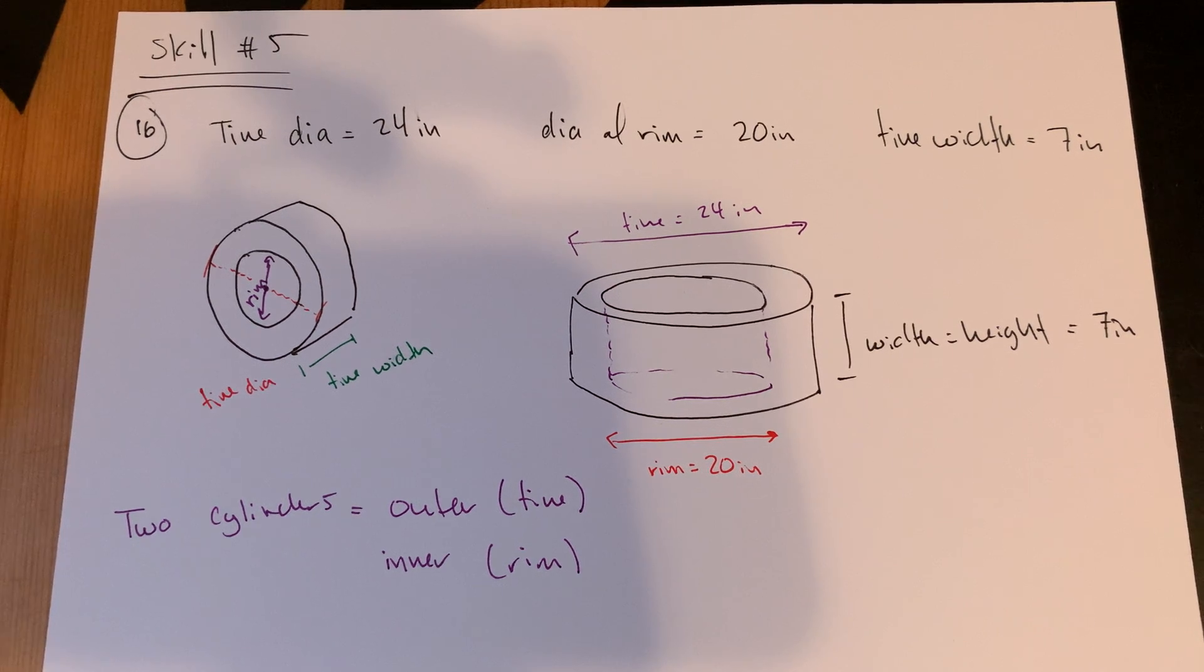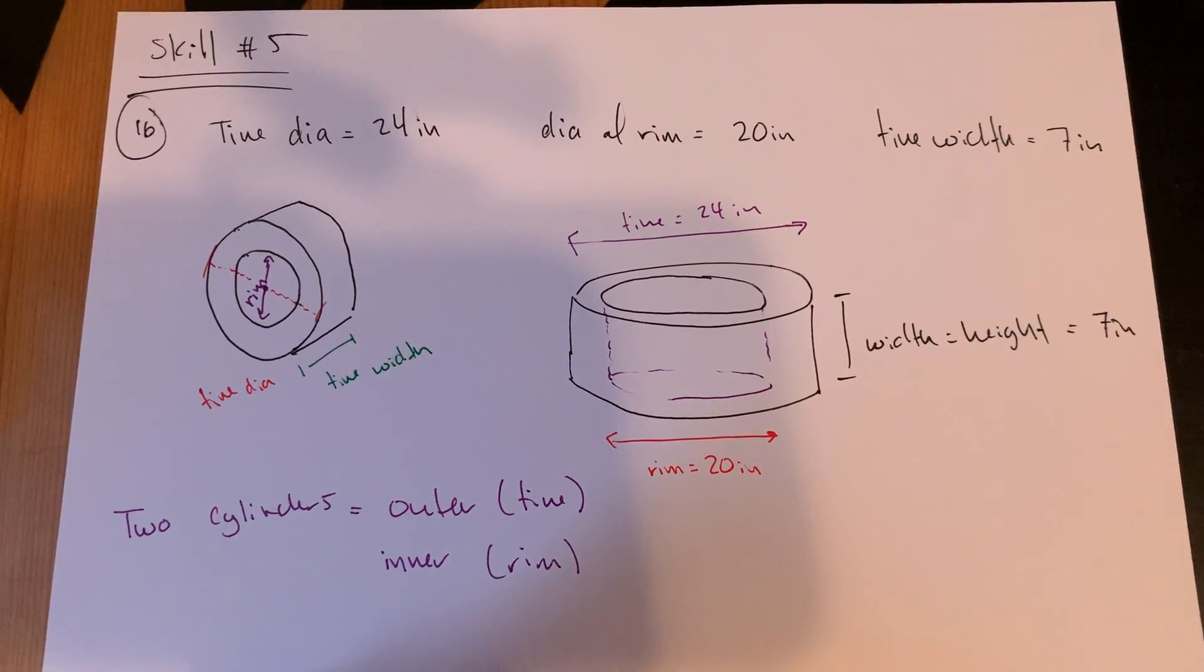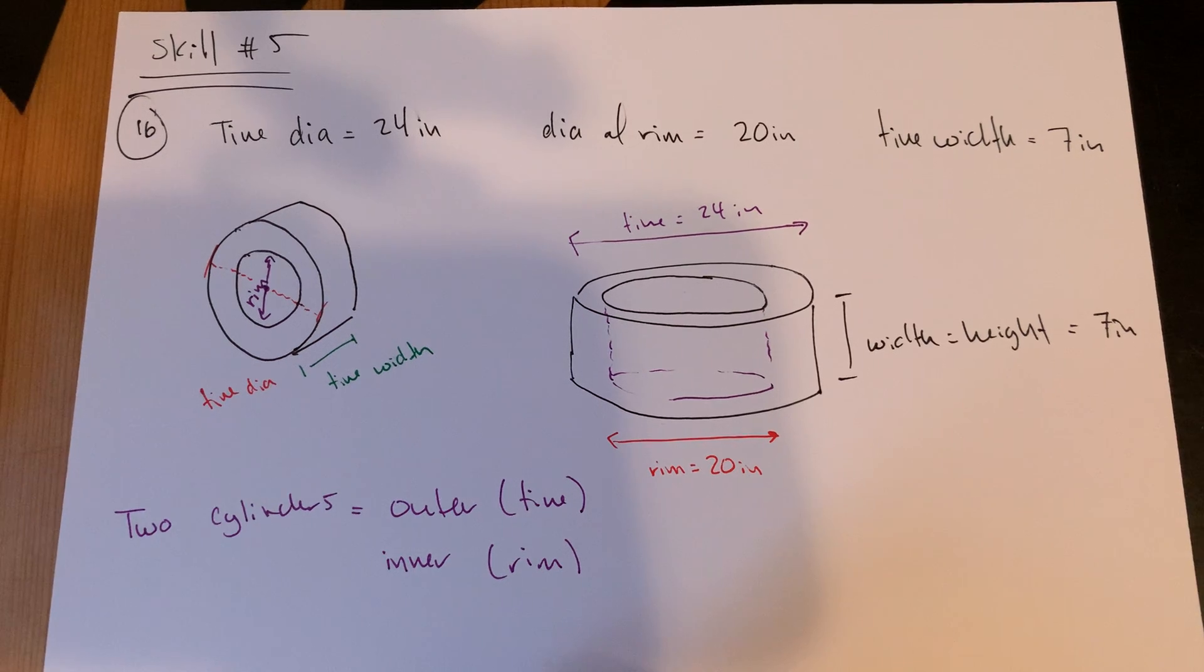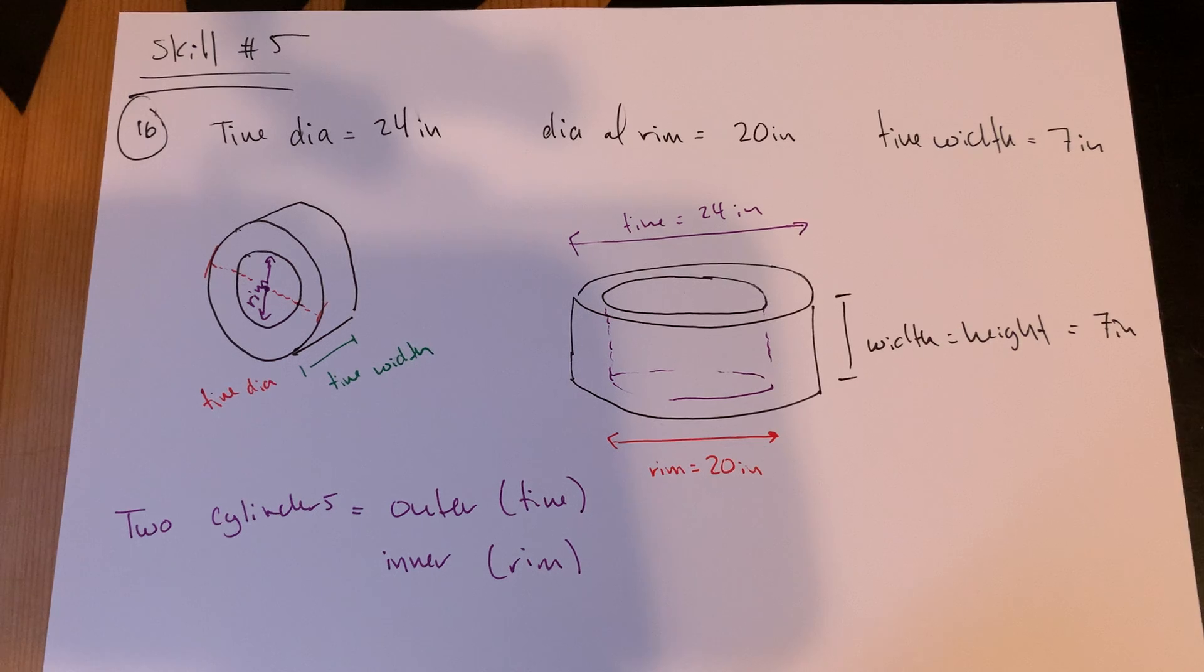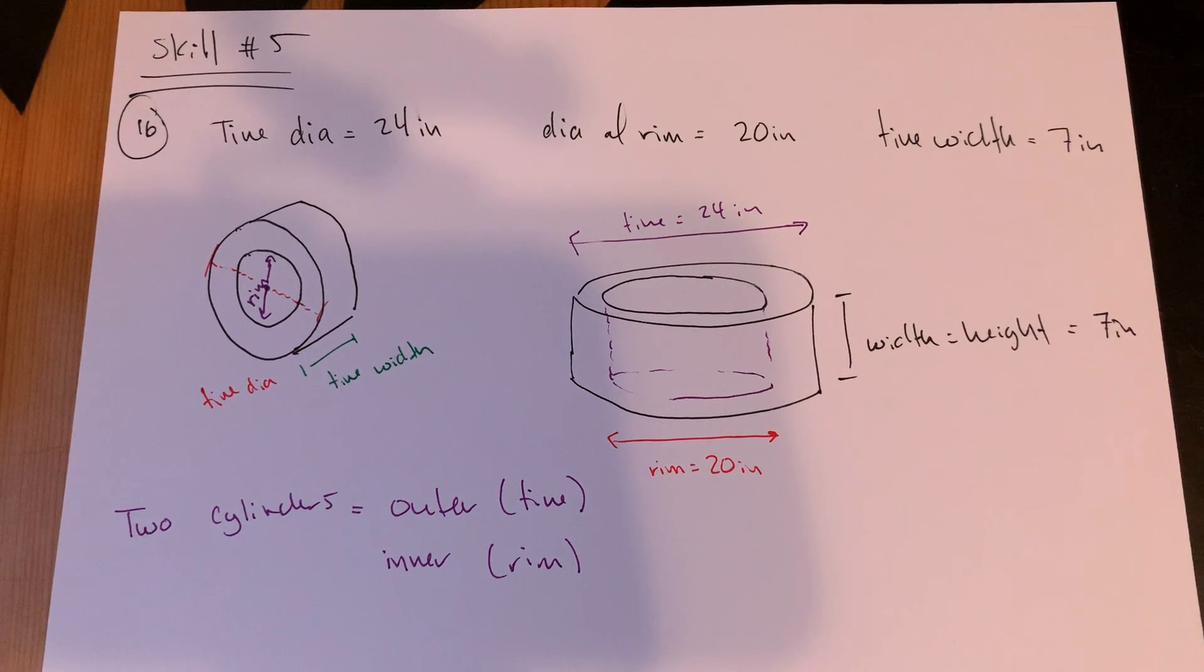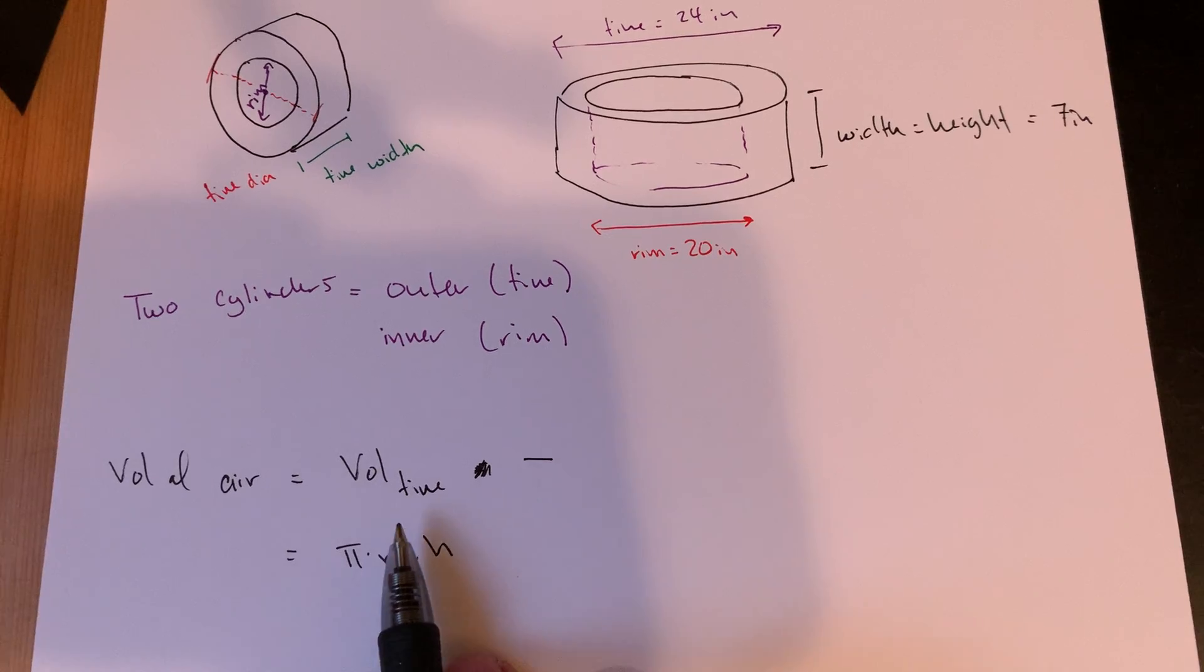So what I need to do here to find this volume is a similar type of idea to what we did with the socket, which is find the total volume, the overall biggest version of the volume. So the volume of the air is the volume of the tire, pi r squared times the height, and then what I'm going to do is subtract away the volume that goes with the rim.